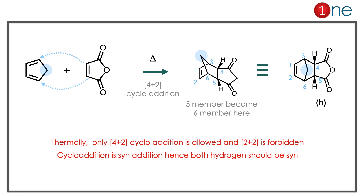The starting material is a conjugated diene and you are using maleic anhydride. Here you have a [4+2] cycloaddition — a bridged carbon is formed. The 5-membered ring becomes a 6-membered ring with one bridged carbon, and you have the symmetrical hydrogens in the syn position. Two key learnings: thermally, [4+2] cycloaddition is allowed but [2+2] cycloaddition is thermally forbidden. Second, during cycloaddition, the addition is a syn process — that is why the hydrogens are in the syn position.